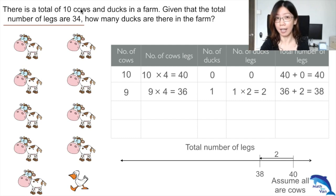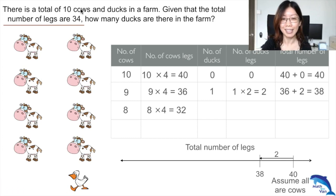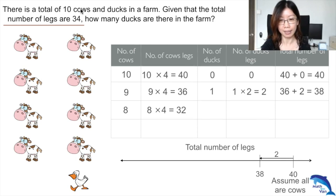At this stage, still too many legs. Let's continue to take out the cow and put in a duck. Now there are 8 cows and 32 legs. Let's welcome the duck. Now we have 2 ducks and 4 legs.